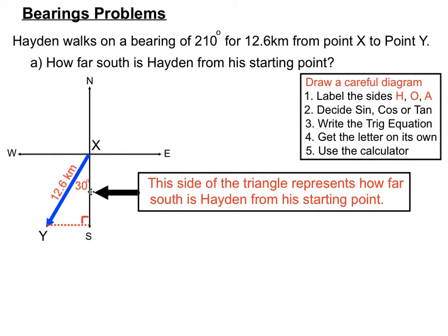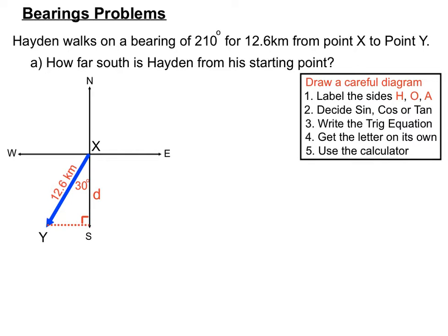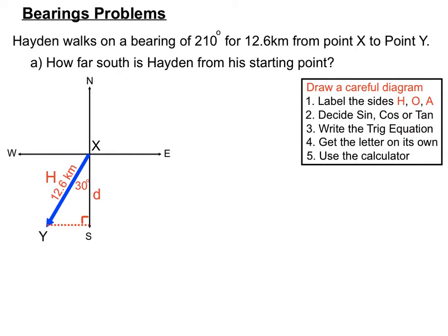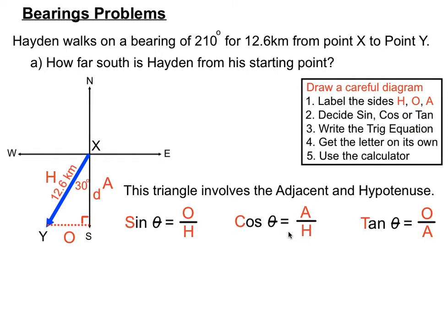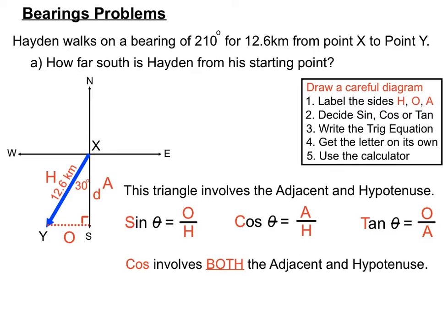We want to find the length of the vertical side — call it D — which tells us how far south he's gone. This right angle triangle involves the adjacent side (D) and the hypotenuse (12.6). Since cosine involves the adjacent and hypotenuse, we'll base our solution on the cosine ratio.